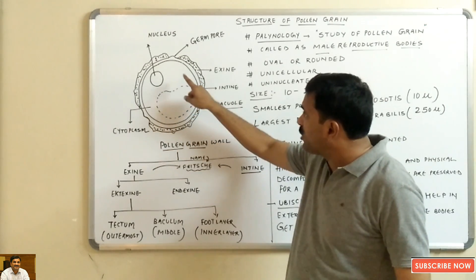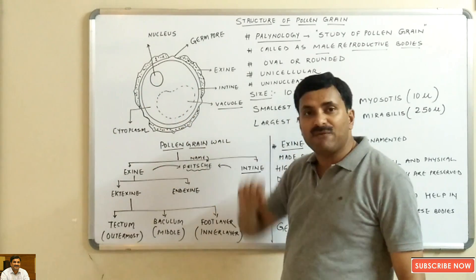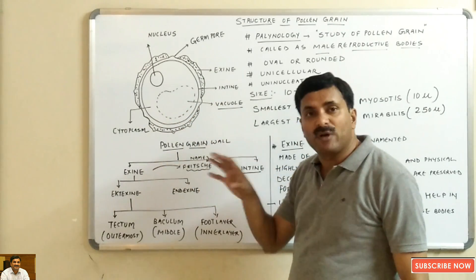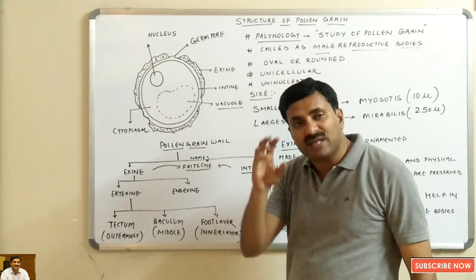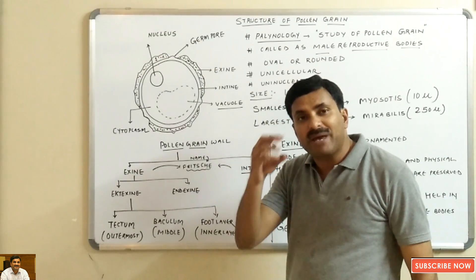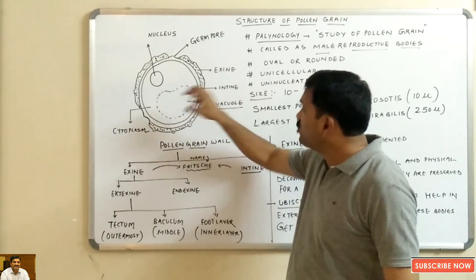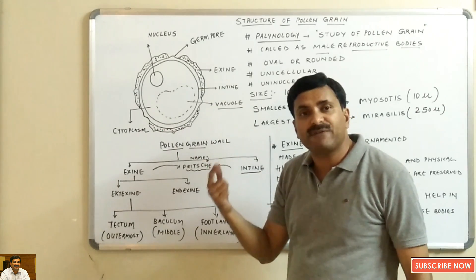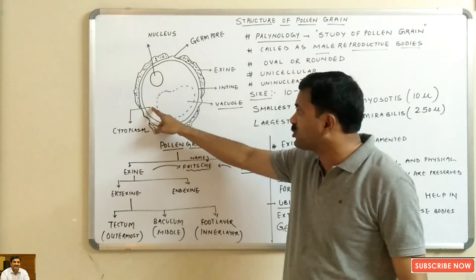If we see a pollen grain from inside, a peripheral nucleus is present. This is because in a mature pollen grain, a big vacuole is present. Initially, the vacuole was not so big — there were many small vacuoles. But as the pollen grain matures, the small vacuoles combine together to form one big vacuole. Due to this, the nucleus and cytoplasm are shifted towards the periphery, which is why a peripheral nucleus and peripheral cytoplasm are present.